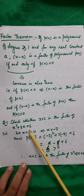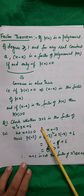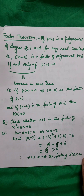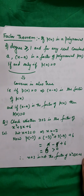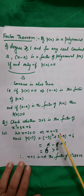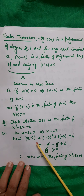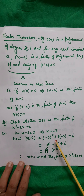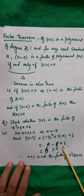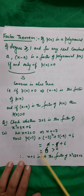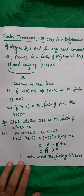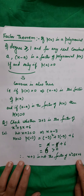Check question: Is (x + 3) a factor of x² + 3x + 6? Put x + 3 = 0, so x = −3. Then p(−3) = (−3)² + 3(−3) + 6 = 9 − 9 + 6 = 6, which is not equal to 0. Therefore, (x + 3) is not a factor of x² + 3x + 6.